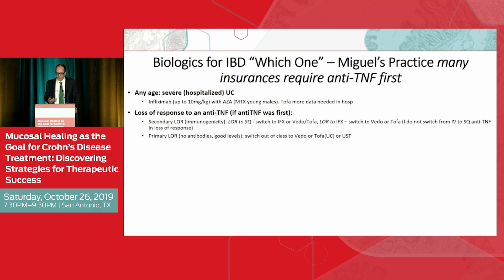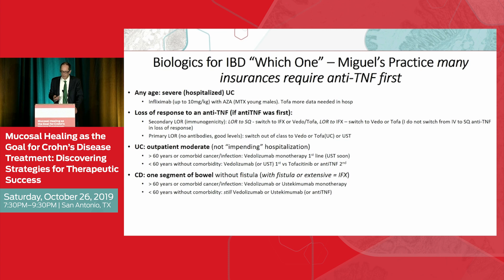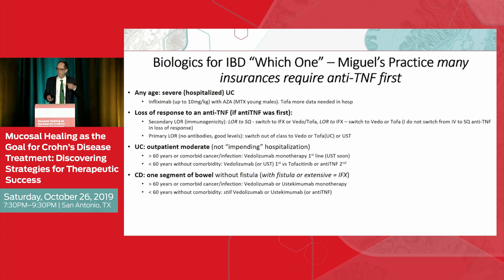Ulcerative colitis outpatient and Crohn's disease outpatient management look about the same. The difference with Crohn's is I consider whether they have a fistula. For a one-segment Crohn's patient without a fistula, I generally use vedolizumab or ustekinumab as my first line — remembering the insurance consideration. However, if they have extensive multi-segment disease — jejunum, ileum, colon — especially with bad perianal fistula, I use infliximab in combination, because the data are most strongly supported there.